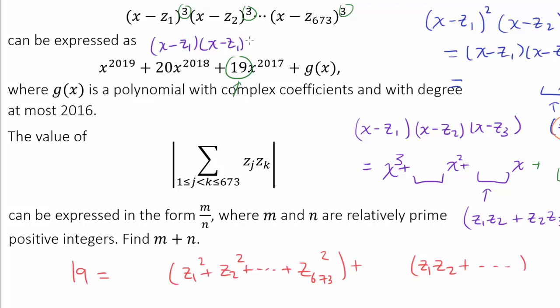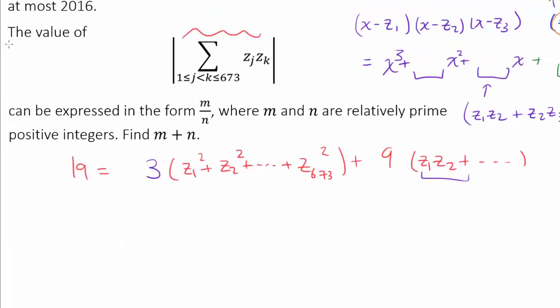And if you look at this closely, since we have 3 x minus z1s, the number of ways to get z1 squared are 3 of them. Because we can pick these 2, or these 2, or these 2. So there are 3 z1 squared, and similarly, we have 3 z sub i squared for any i. And how many ways are there of picking z1 times z2? There are 3 different ways of picking z1, and 3 different ways of picking z2. So there are 9 of these each.